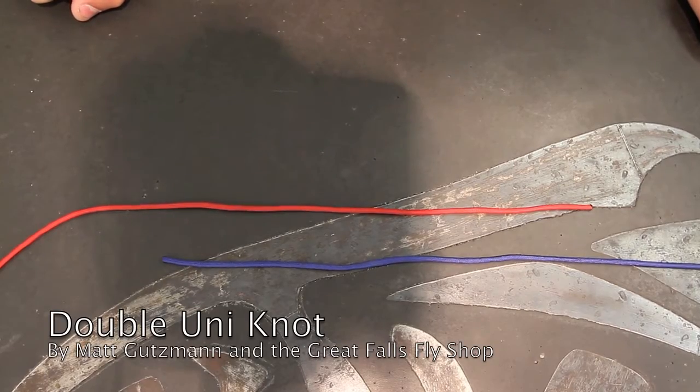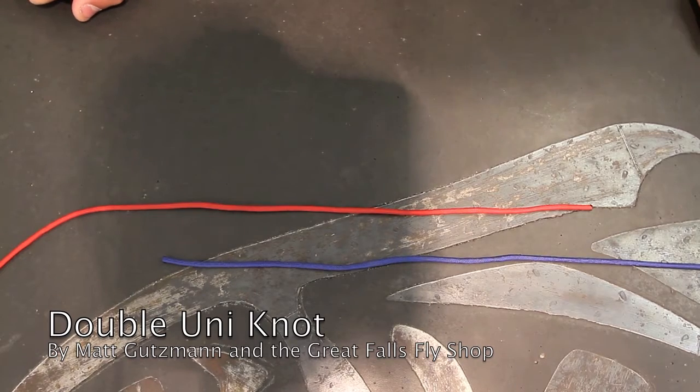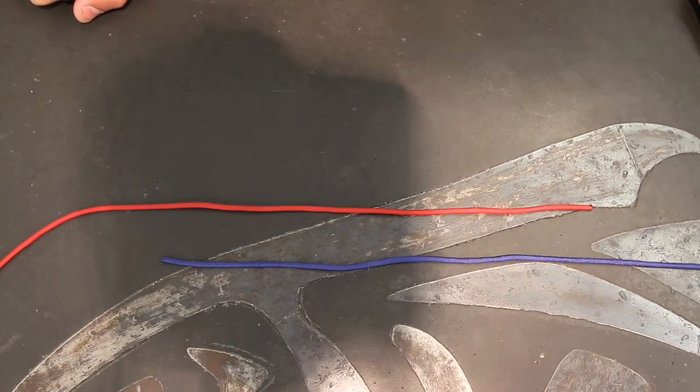We are going to tie a double uni knot or a uni to uni knot. It's a good knot to tie for connecting two sections of leader.